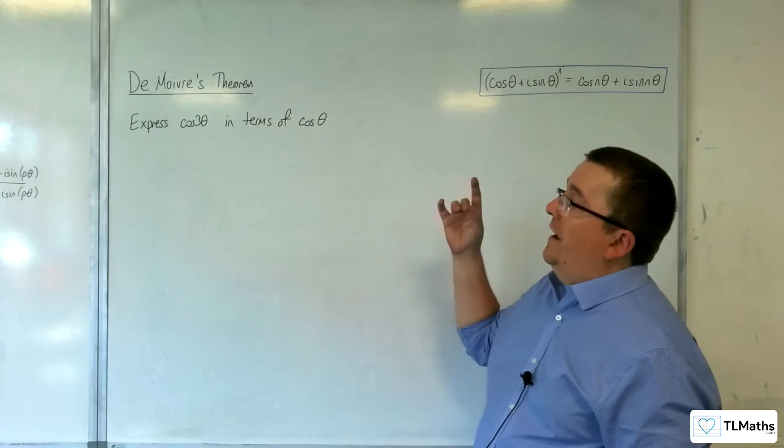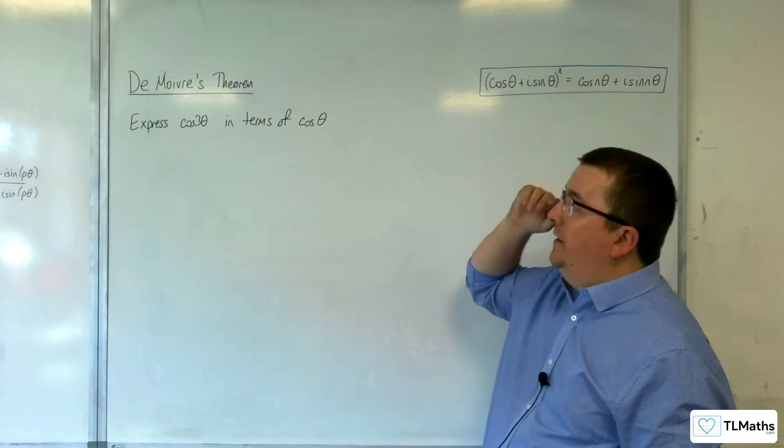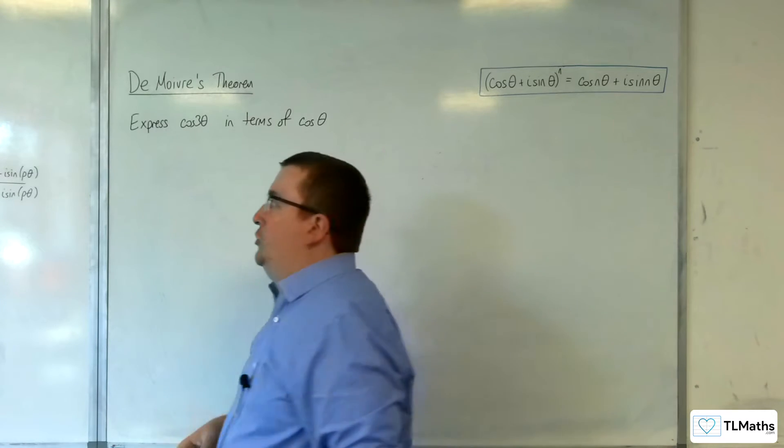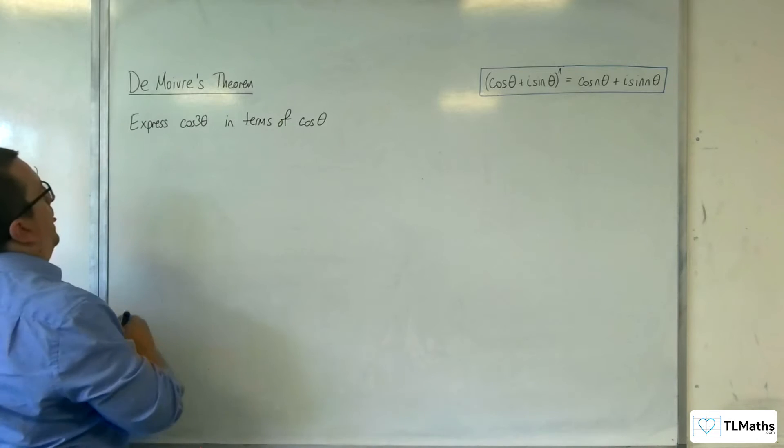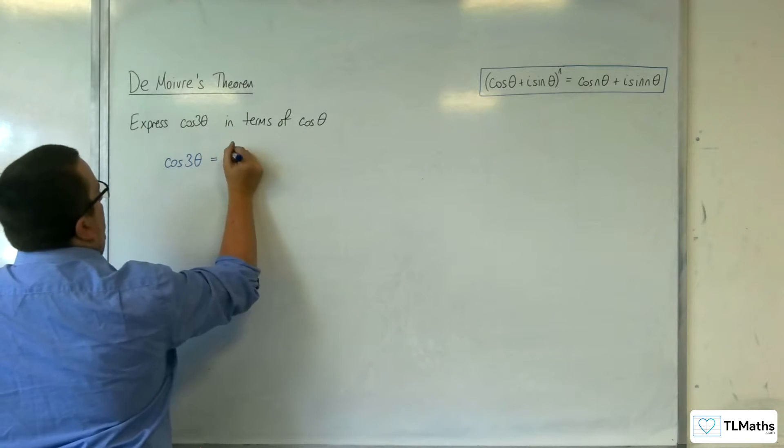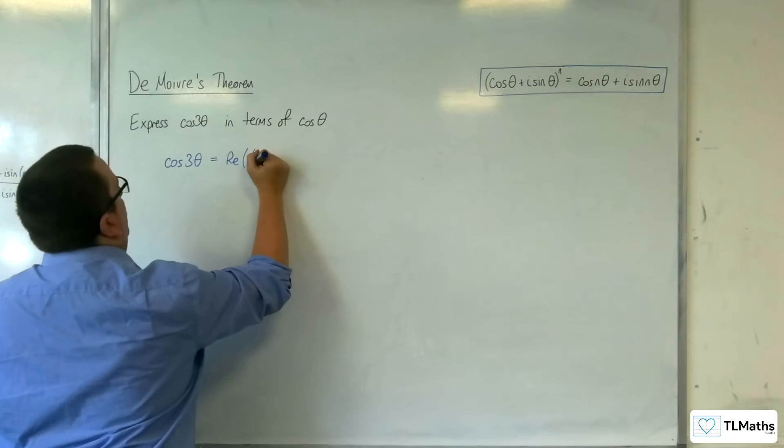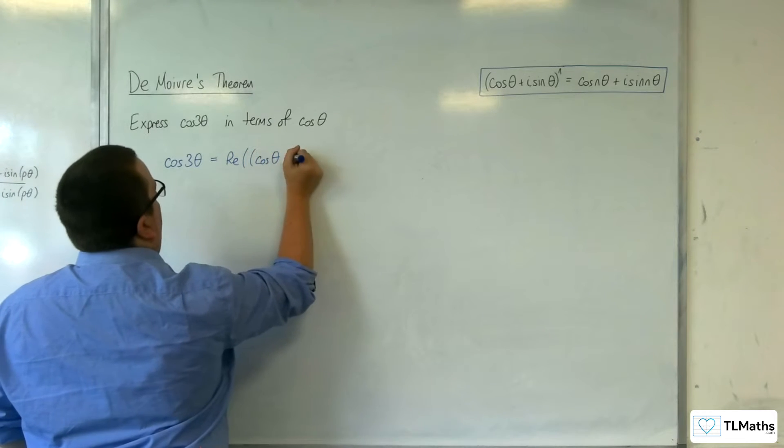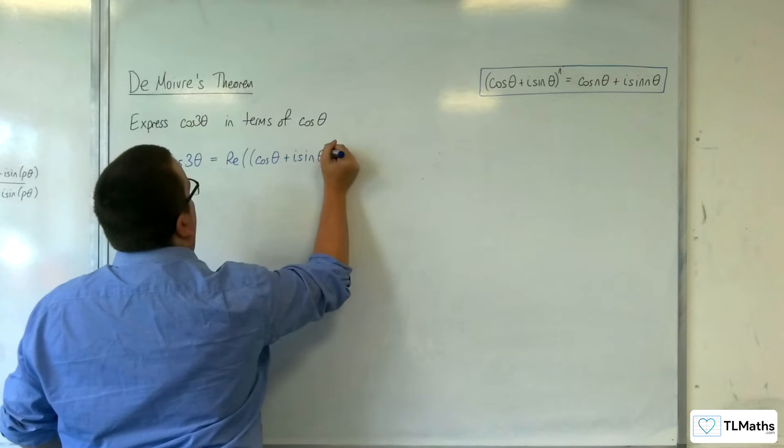In this video we're going to look at expressing cosine 3 theta in terms of cosine theta just using Moivre's theorem. So cosine of 3 theta is going to be equal to the real part of cosine theta plus i sine theta cubed.